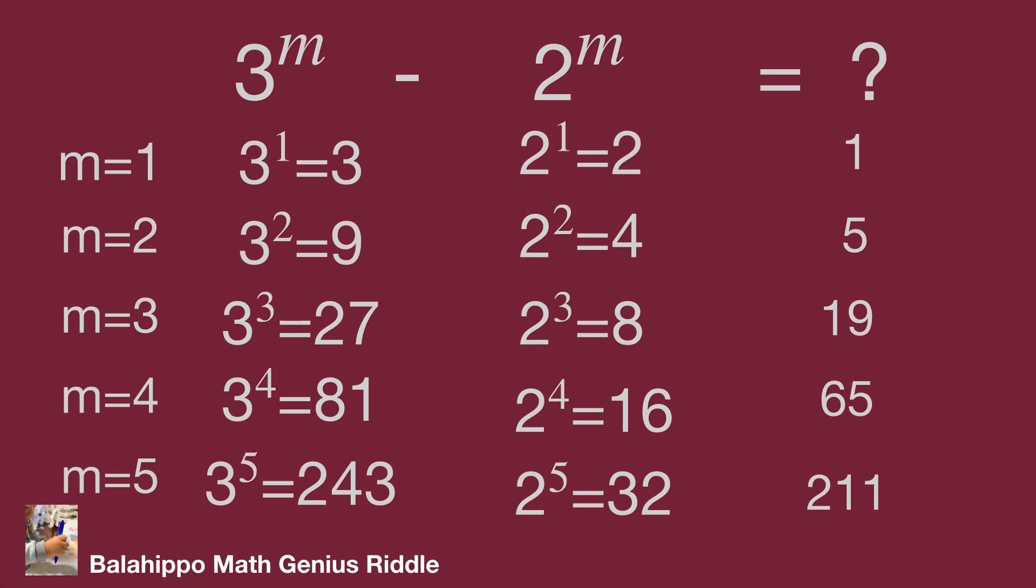In this value list we find, while increasing the m value, the value of 3 power m increases much larger than the value of 2 power m, such as 3 power m equals 3, 9, 27, 81, 243,